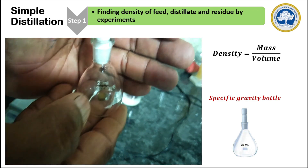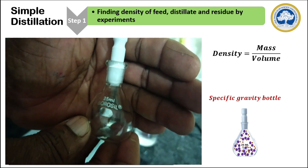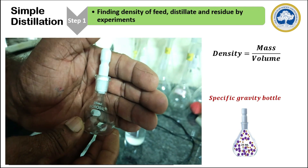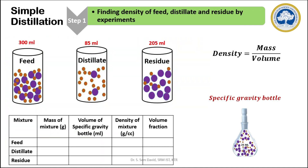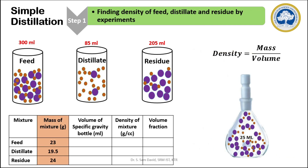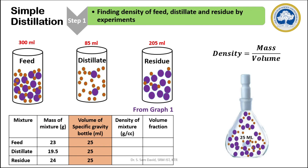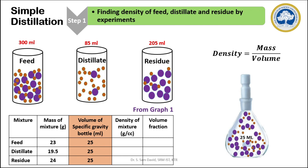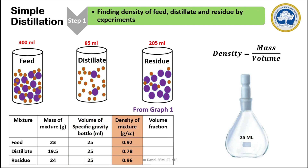The Teflon lid ensures that exactly 25 ml of solution alone is kept inside the bottle. When we measure the weight of the specific gravity bottle with the solution and the lid, we get the total weight of the bottle. Then we subtract the empty bottle weight from the total weight to obtain the mass of the mixture. We have to calculate the mass of the feed, distillate, and residue in the same way. As the volume of the specific gravity bottle is 25 ml, we fix the volume as 25 ml for all three samples. The density can then be calculated by finding the ratio of mass to volume of the solution. Once we find the density of the mixture, the first step is completed.